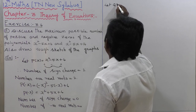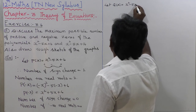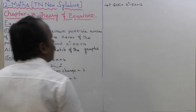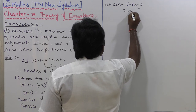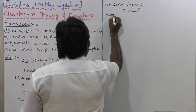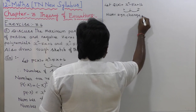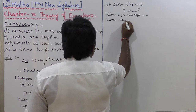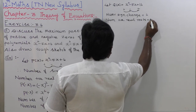Now let us consider the second equation: q of x equal to x squared minus 5x plus 16. The first term is plus, second term is minus, third term is plus. So we have two sign changes: plus to minus, and minus to plus. Therefore, number of sign changes is equal to 2, and the number of positive real roots is equal to 2.